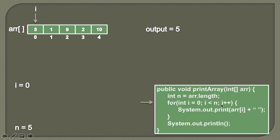Now we will increment i by one, so i becomes one. And now i will point to index one. Here we'll check whether one is less than five or not. This Boolean condition comes out to be true, so the for loop executes, and then we'll simply print the value at the second index, which is nine.